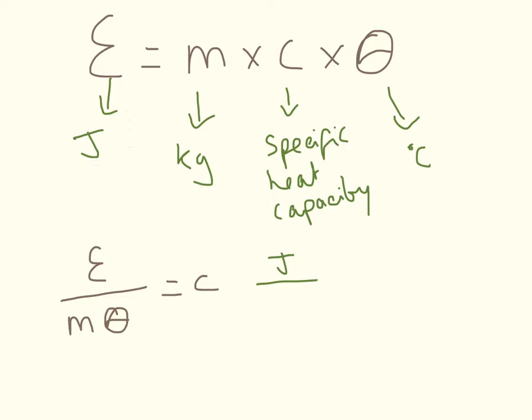So we put joules for energy on top, kilograms and degrees C equals C. So our units for specific heat capacity are joules per kilogram degree.